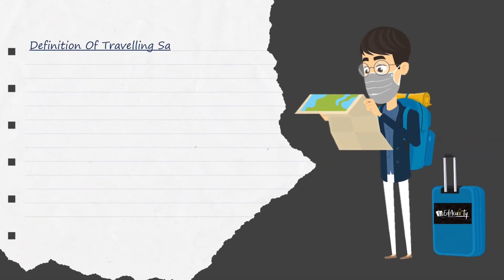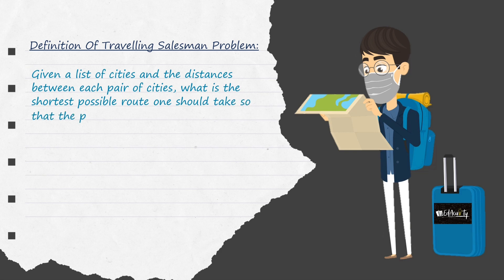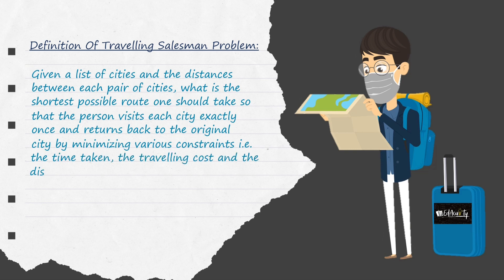Let us now have a look at the definition of the travelling salesman problem. It states that: given a list of cities and the distances between each pair of cities, what is the shortest possible route one should take so that the person visits each city exactly once and returns back to the original city by minimizing various constraints, i.e. the time taken, the travelling cost, and the distance travelled.